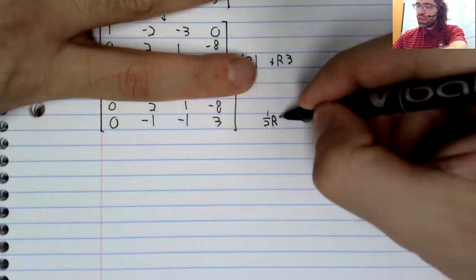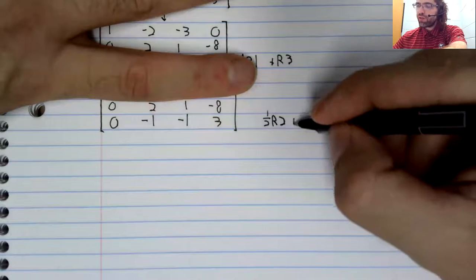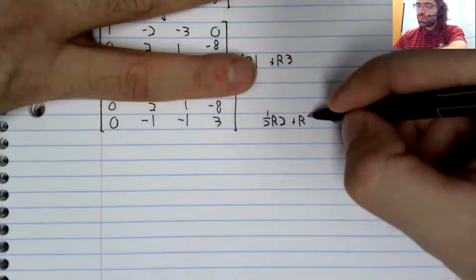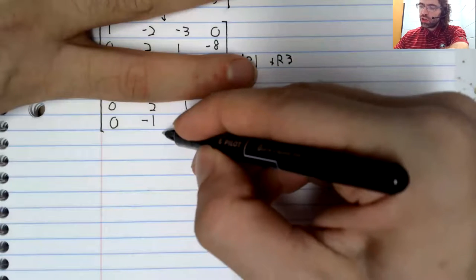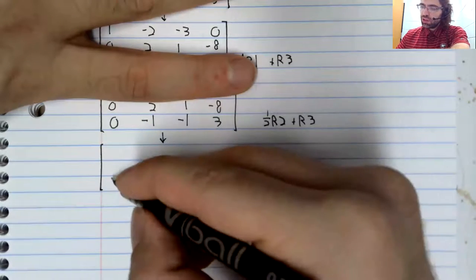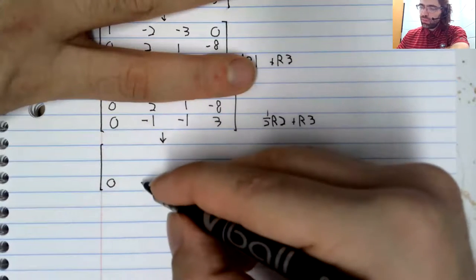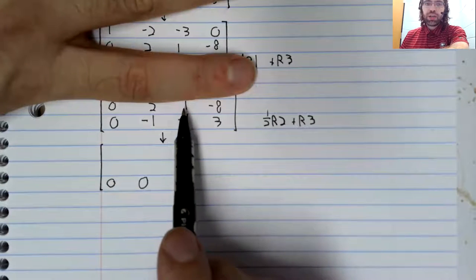We'll multiply the second row by one half and add it to the third row. So zero, zero. When we multiply this by one half...